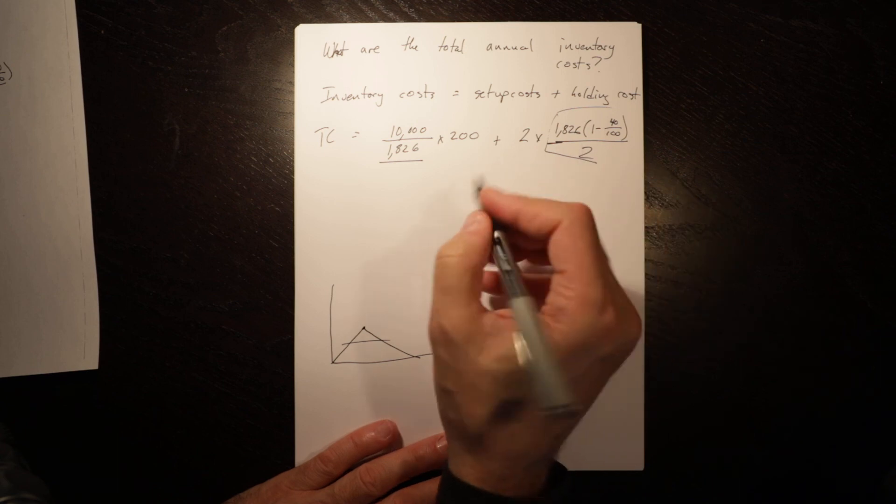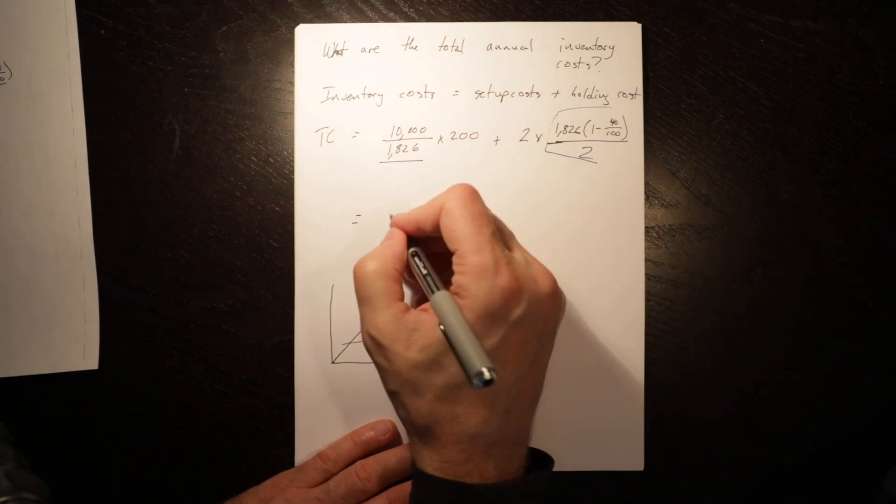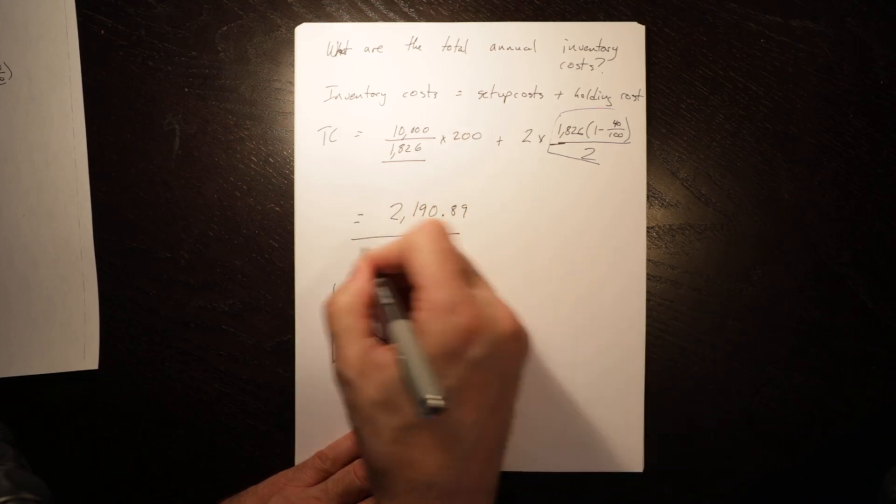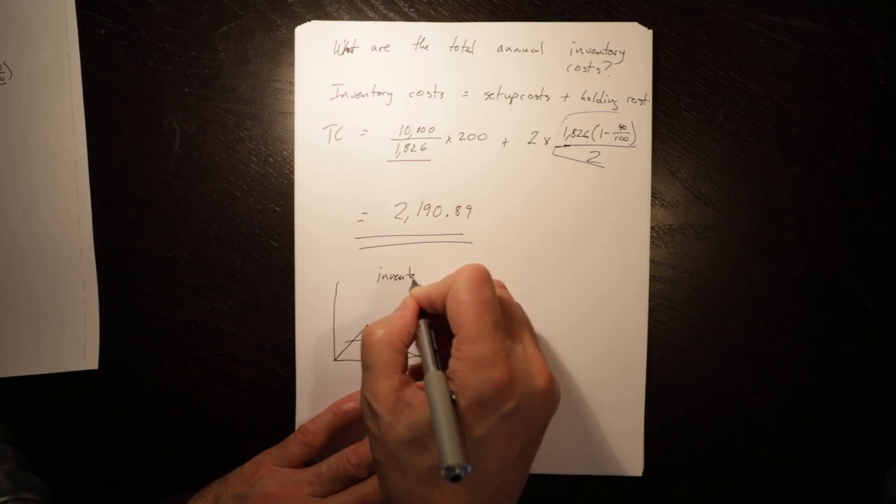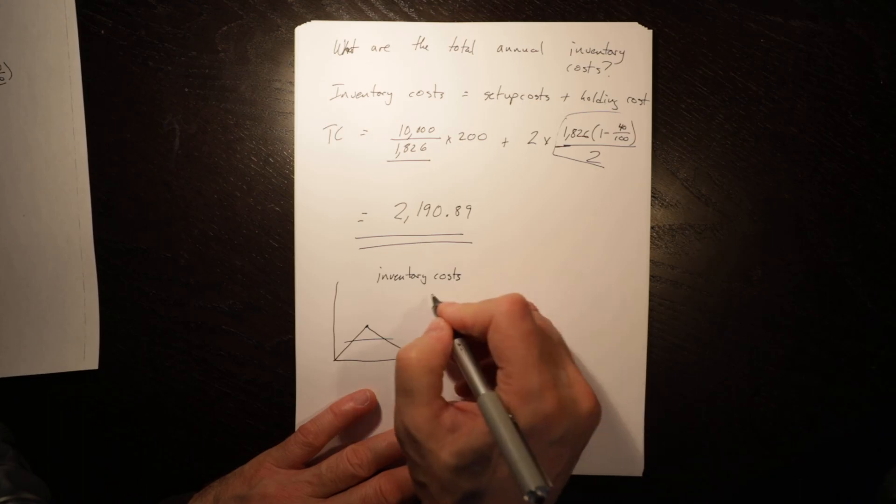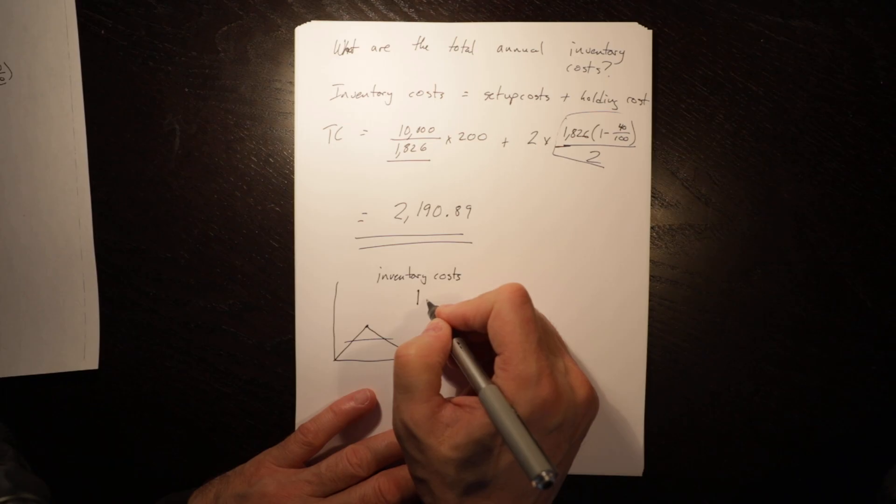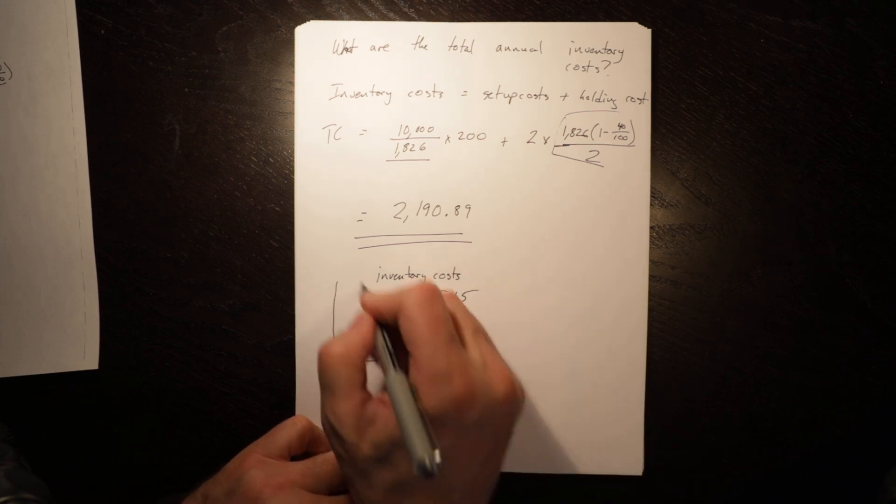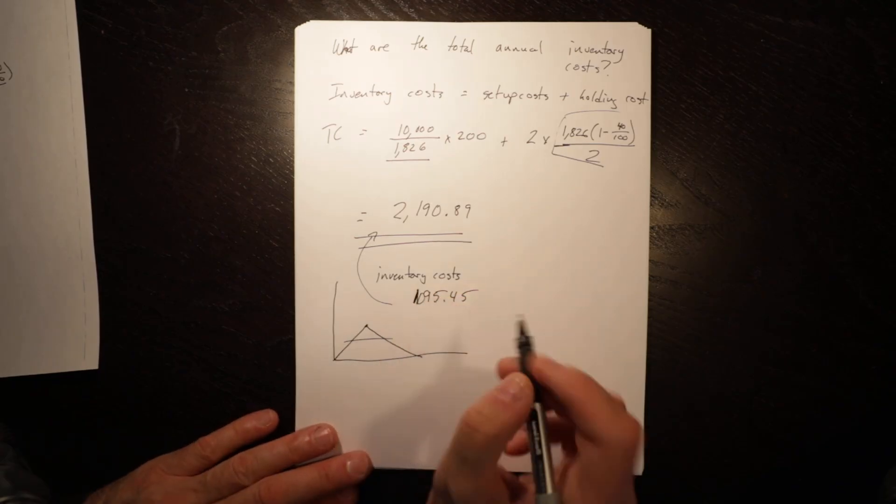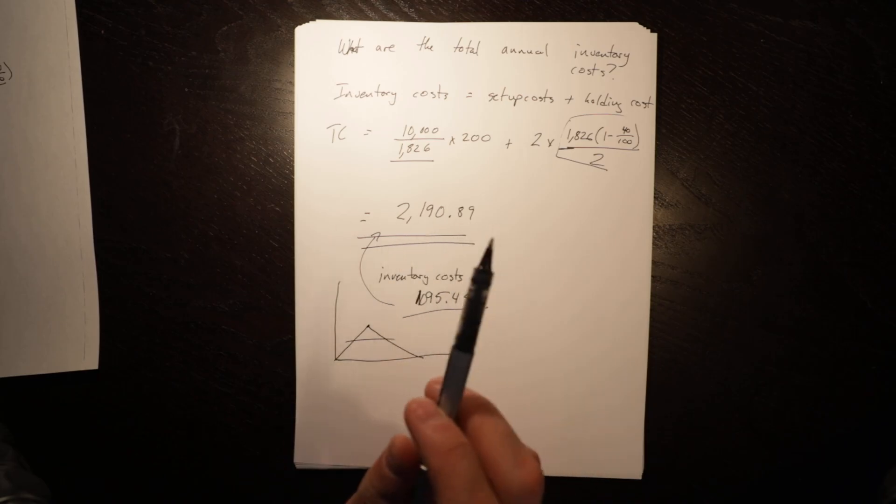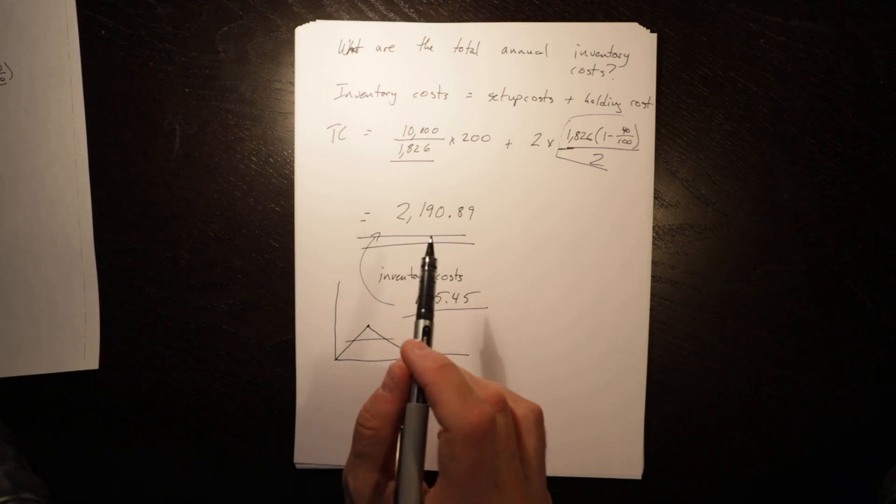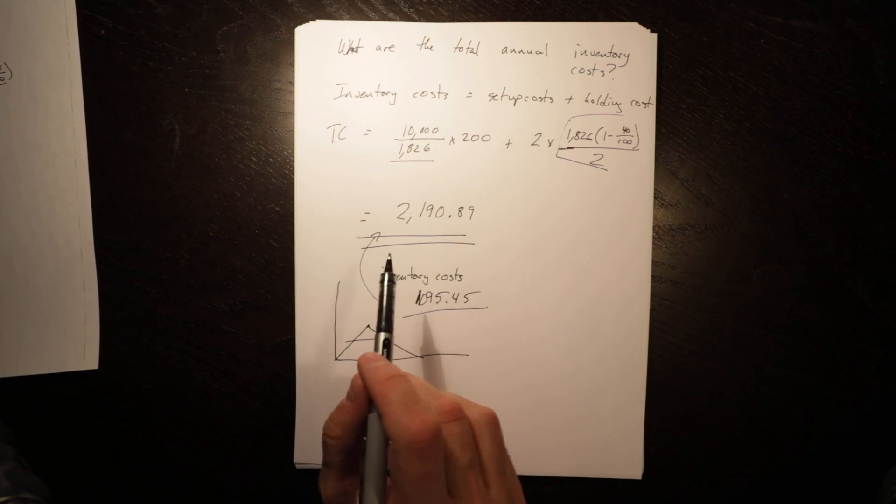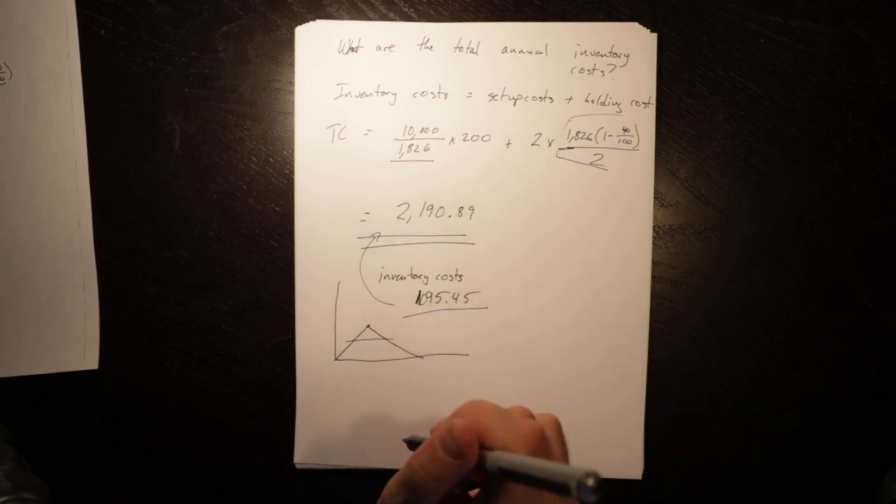So max inventory equals 2190.89, and you will know without even doing the interim calculations that inventory costs are 1095.45, which is exactly half of that, as long as I've done the math in my head correctly. Because the POQ by definition, review the introductory video, it is the point at where holding costs is exactly equal to setup costs. Holding costs go up as batch size gets bigger, setup costs come down as batch size gets bigger, and so we find the point at where they are exactly equal, and that gives us the optimal.